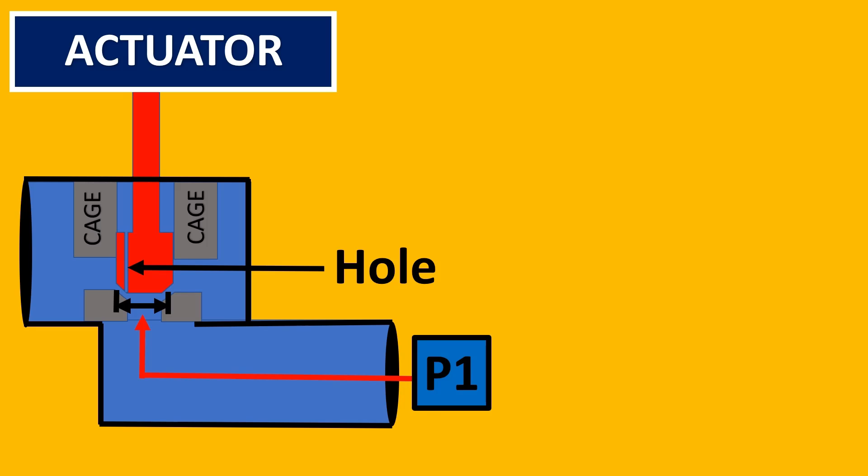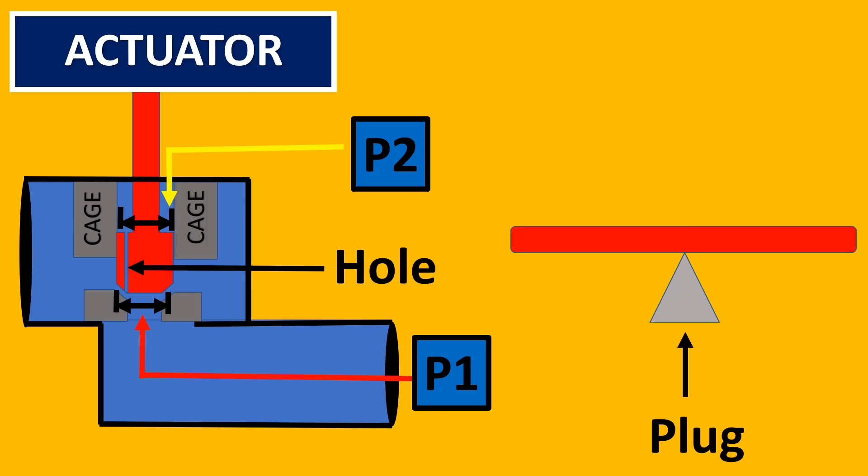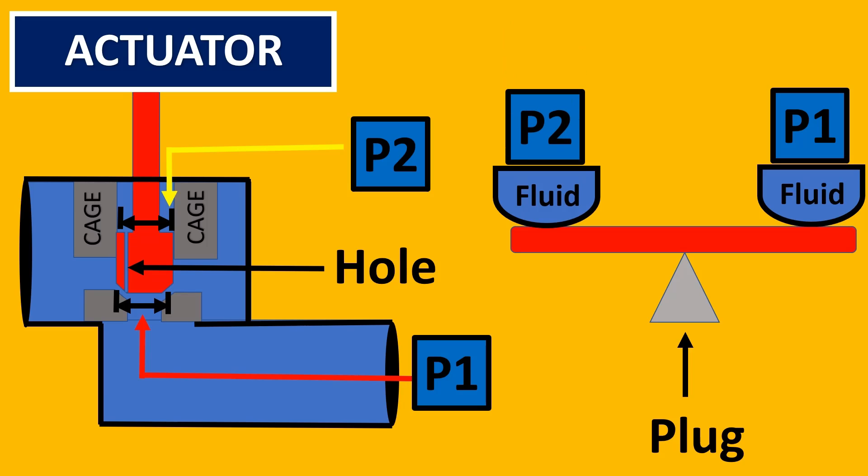Here, let's imagine this is the force P1 acting and here this force P2 acting. If you take the same example of a seesaw, on one side is the fluid force P1, but on the other side approximately the same force P2 is acting on the trim. Now the actuator has to put very little force to move the plug assembly.